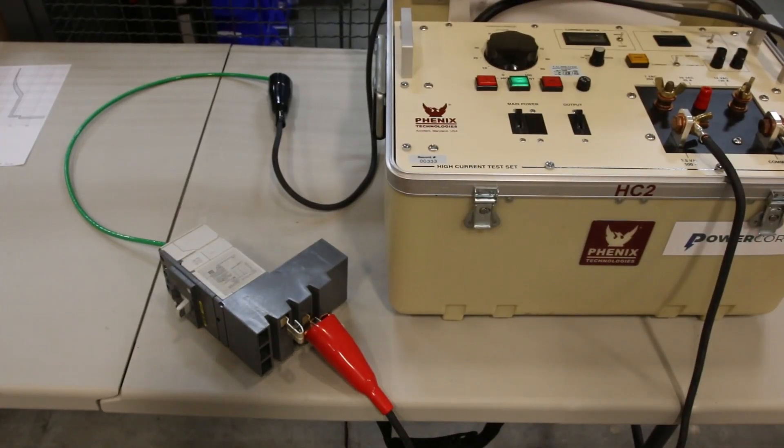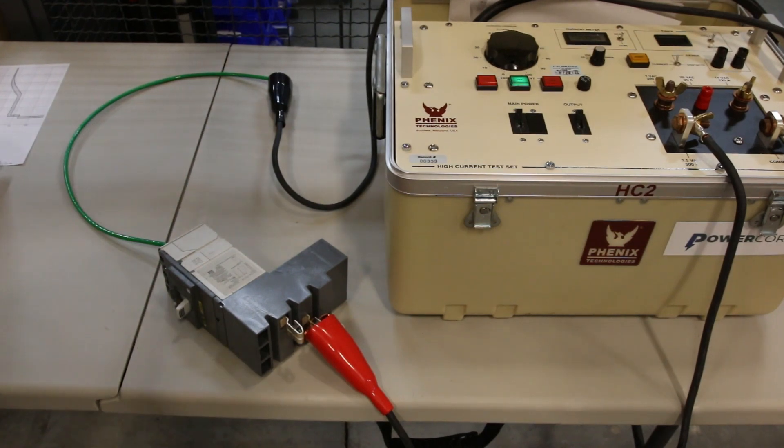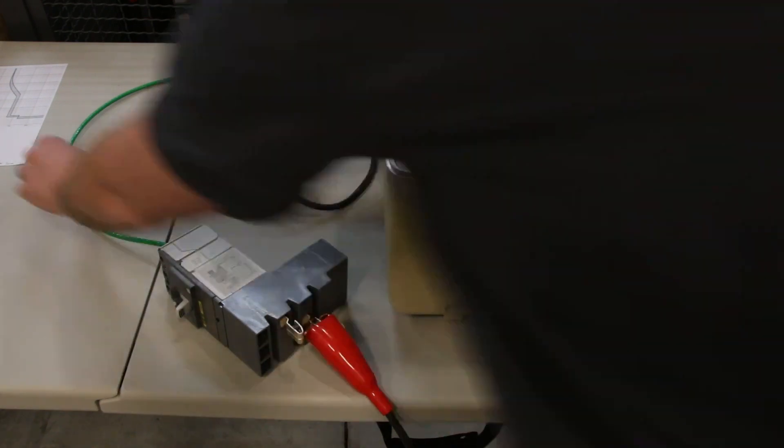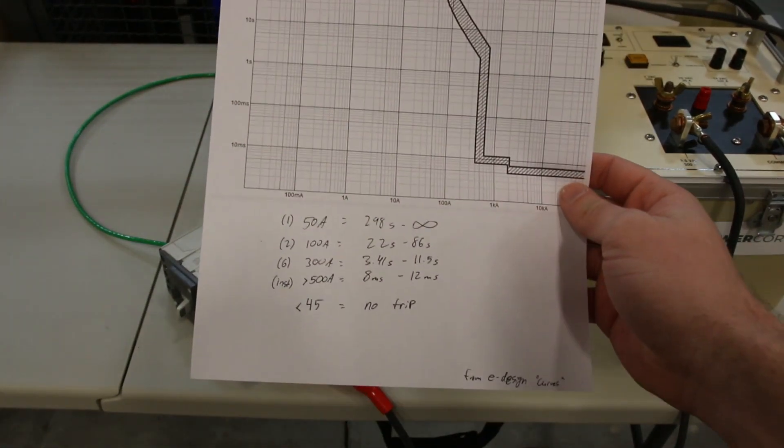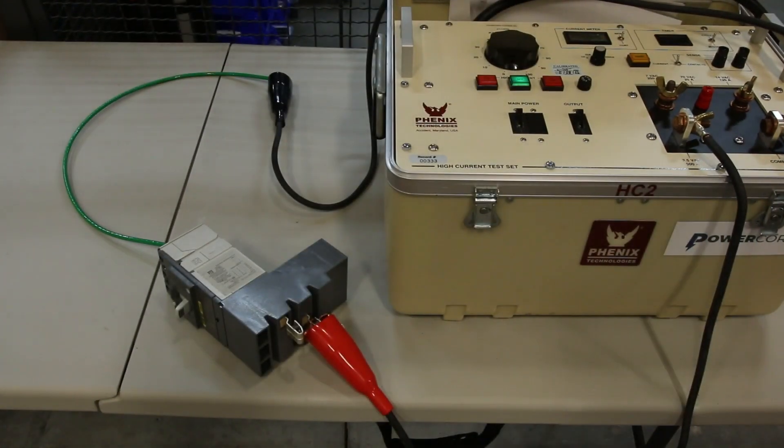So I got this set up. We're going to try and trip this at six times I am, which in this case is 300 amps. Should trip according to the manual in 3.4 to 11.5 seconds. We'll be able to time that right here.